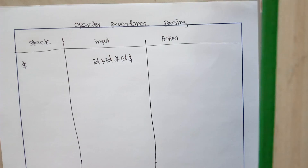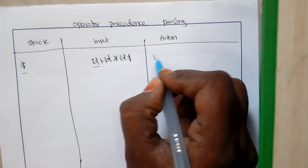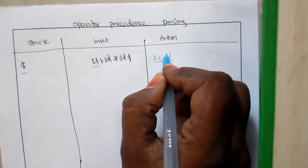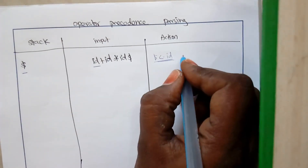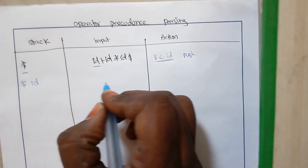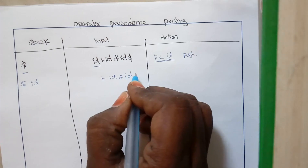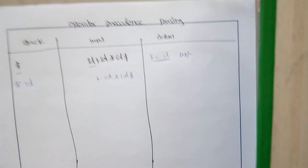Based on that, we perform some actions. Whenever the stack element has a lesser precedence over the input element, we remove that input element and push it into the stack. In this case, when you compare dollar and id, dollar has a lesser precedence over id. So we remove id from the input and push it to the stack. The remaining input will be plus id star id followed by a dollar symbol.